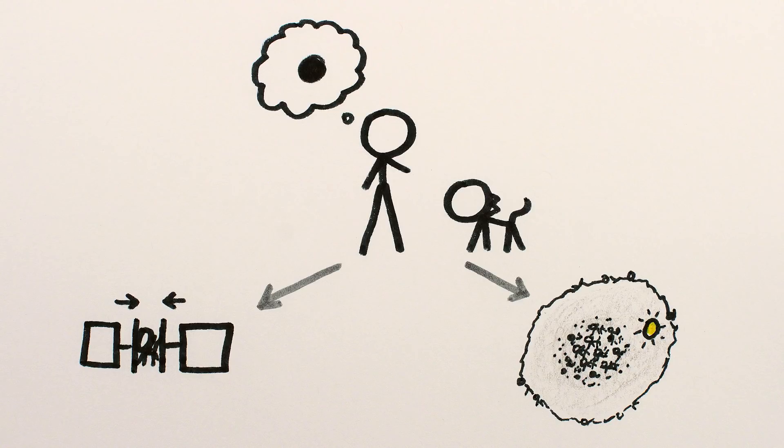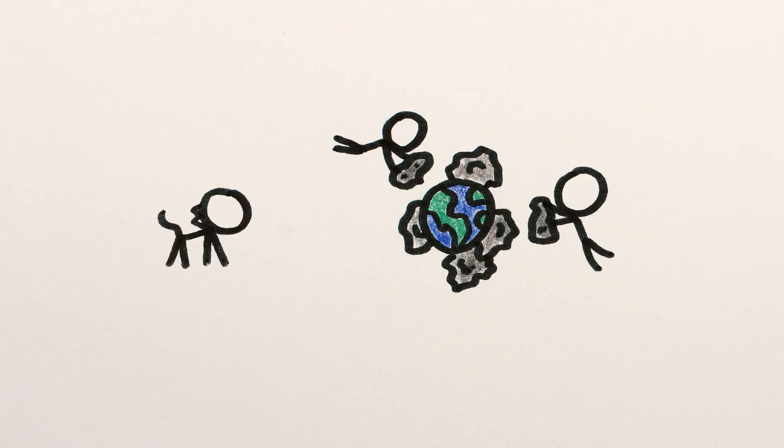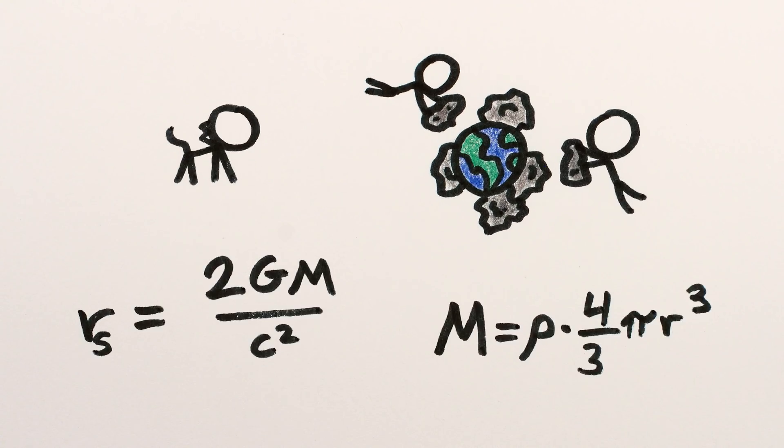You may have noticed I just said beyond the Sun, and not almost to the Sun which was the case with the Earth. That's because cats aren't as dense as rocks, so they'll have a different black hole tipping point. I challenge you to figure it out using the Schwarzschild radius and mass of a sphere equations, and leave your answer in the comments.